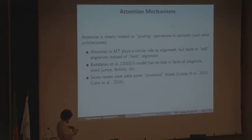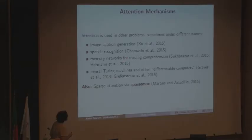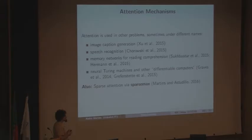There are extensions including structural biases. Attention is also used for caption generation from images and for speech recognition. In memory networks, instead of attending over words you attend over a large external memory, simulating read and write operations over memory. Combining these ideas gives you neural Turing machines — end-to-end differentiable emulation of a computer being developed at DeepMind and elsewhere.